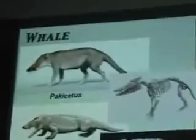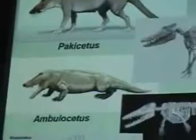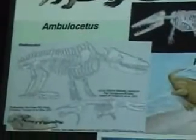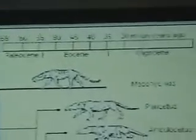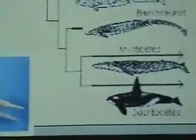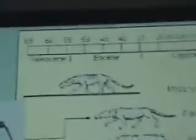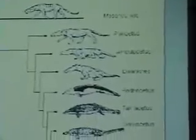Whale evolution is another classic example we have in the fossil record of evolutionary transition. This diagram shows the major players from land mammals and mesonychids down to our modern whales, with the loss of the hind limb and progressive movement of the nostrils up the snout. If you looked at whale evolution phylogenies today, you'd see there are probably ten times as many intermediates now as we are discovering more and more intermediate fossils.